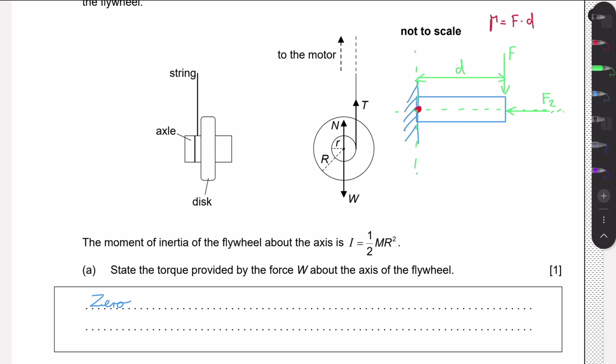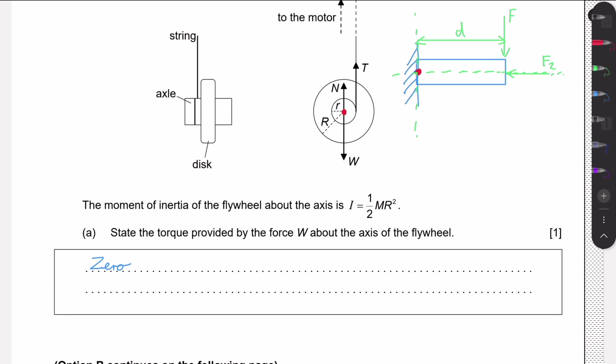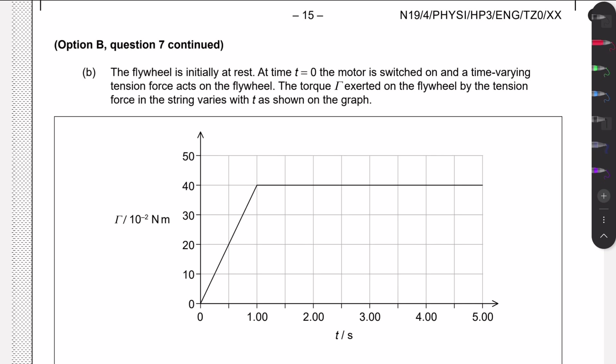This is a very important concept: if we extend the line of a force and it passes through the axis of rotation, the torque produced by that force is always zero. Here in this question, the weight clearly passes through the axis of rotation, so its torque is zero. The tension, however, acts at a distance from the axis, so it can produce a torque and make the flywheel rotate.